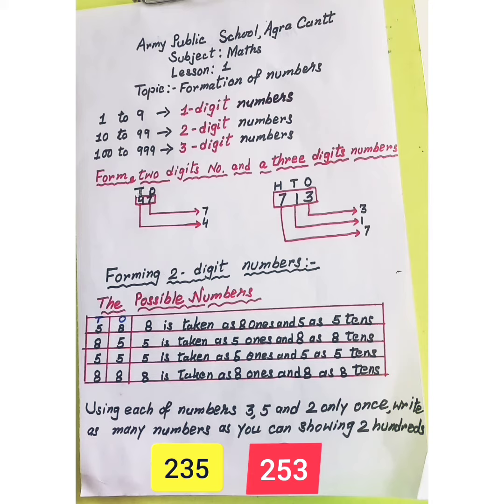Now interchange the digits. We get the other number 85. Here 5 is taken as 5 ones and 8 is taken as 8 tens, so we get the number 85.